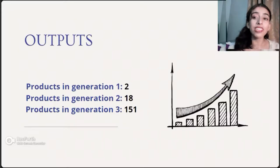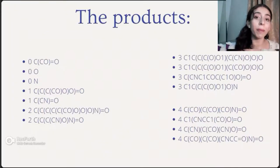Looking at our outputs, we see two products in generation 1, to a growth of 151 products in generation 3 and over 2000 in generation 4. These products vary in size and complexity as the generation grows.